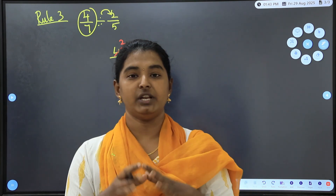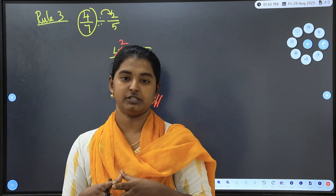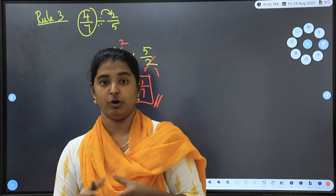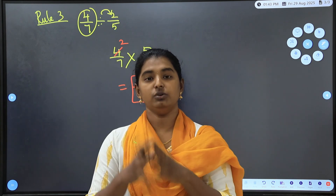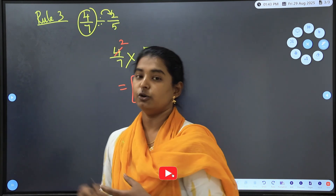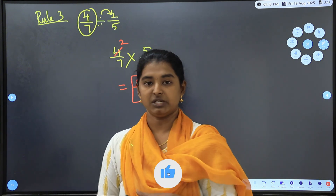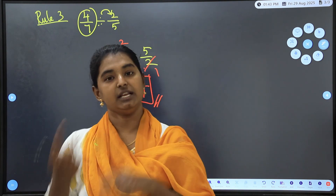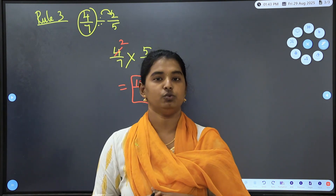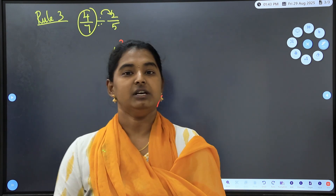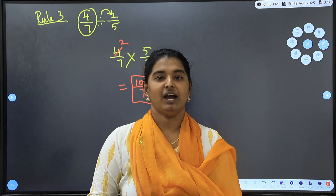These are the important rules for solving fraction questions. Rule 1: for addition or subtraction with different denominators, use the LCM method or Butterfly cross-multiplication method. Rule 2: for multiplication, do the cancellation first. Rule 3: for division, change to multiplication sign and flip the second fraction, then cancel. Please follow the page and do like and subscribe. Thank you.